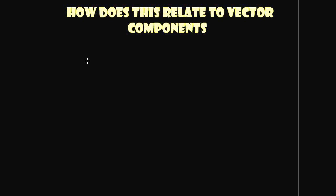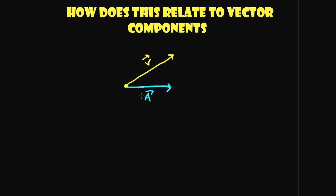A good question at this point: how does all this relate to vector components? In a previous video we talked about breaking a vector into its x and y components. Breaking a vector into components is nothing more than creating triangles and finding the lengths of the sides. Let's relate that to vector addition. If you have some vector here, it must be the result of adding vector A and vector B — its component vectors.